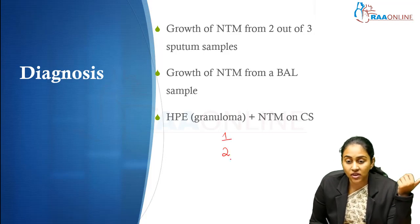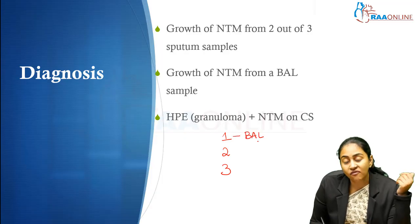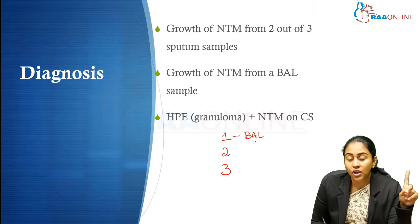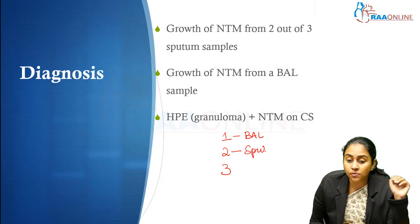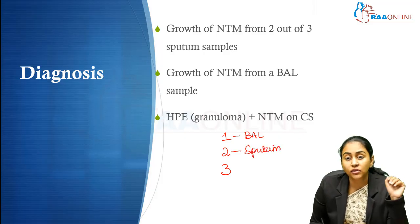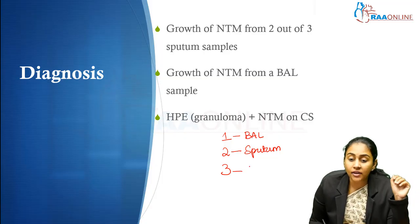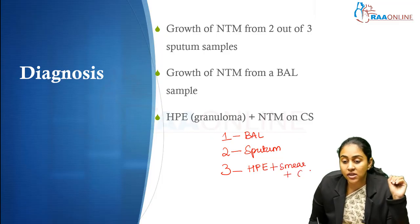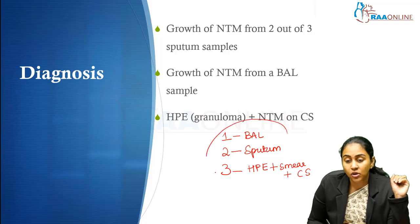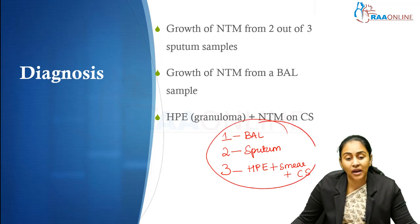This is the 1-2-3 rule. Growth of NTM on any one BAL sample is enough to make a diagnosis of pulmonary NTM. Growth of NTM on at least two out of three sputum samples is required to make a diagnosis of pulmonary NTM. And if you are planning to make a diagnosis from histopathology, you need three components: histopathology showing granulomas, sputum smear AFB positive, and sputum culture growing NTM.